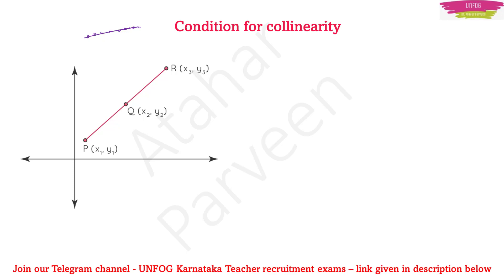The coordinates of each point are: for P it is x1, y1; Q is x2, y2; and R is x3, y3. We give the coordinates as x and y because the points are lying between the x-axis and y-axis. So points lying between the x-axis and y-axis will be named x1 y1, x2 y2, x3 y3, and so on.